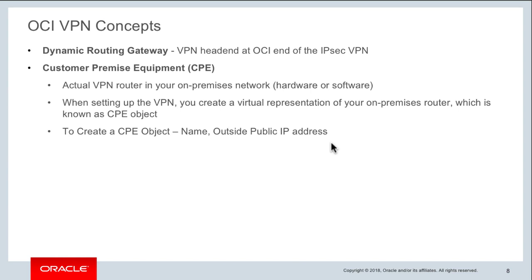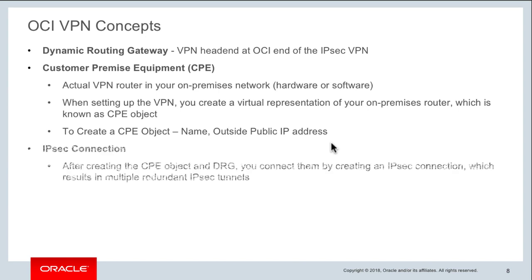When setting up your VPN, you create a virtual representation of that router called a CPE object. When creating the CPE object, you provide basic information: a name and the public IP address of your actual router. Once you have the CPE object and the DRG attached in your OCI console, you can create an IPSec VPN connection between your DRG and your CPE. When you create an IPSec tunnel, multiple redundant tunnels are created — logically and physically isolated — and each tunnel has an IP address and a secret key.